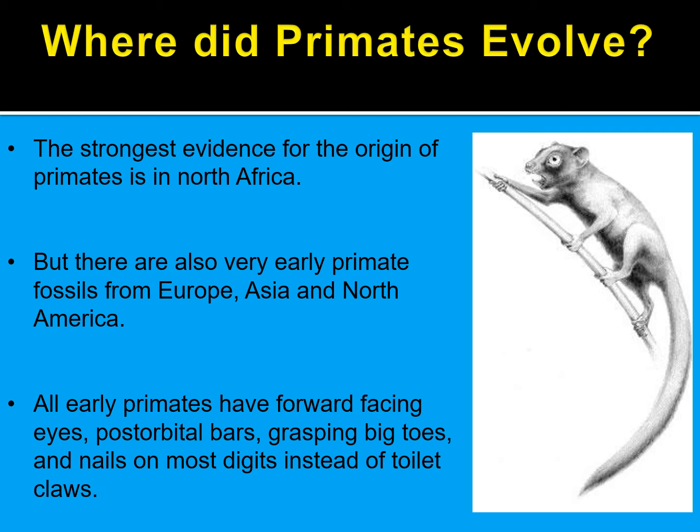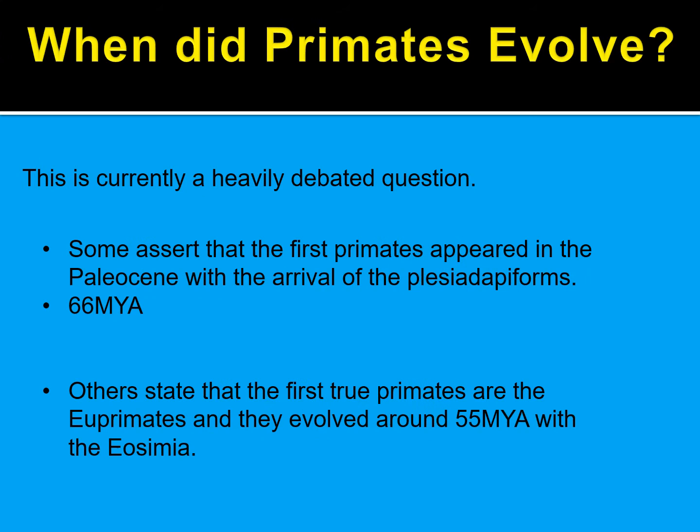Where did our first primates evolve? The strongest evidence we have for the origin of primates is in North Africa, but there are also very early primate fossils found in Europe, Asia, and North America. All early primates have forward-facing eyes, at least post-orbital bars, big grasping toes, and nails on most digits — except for toilet claws.